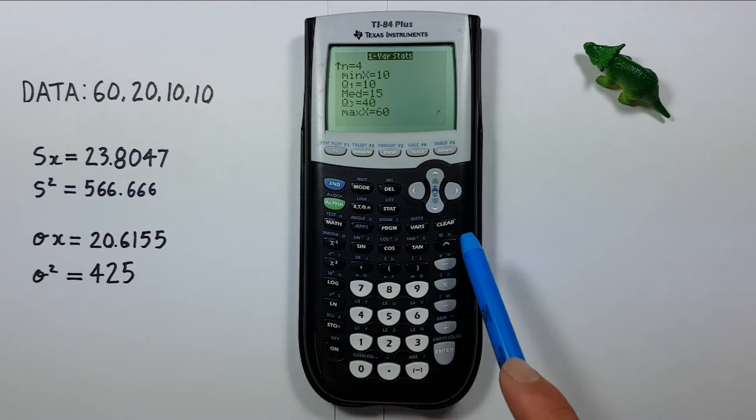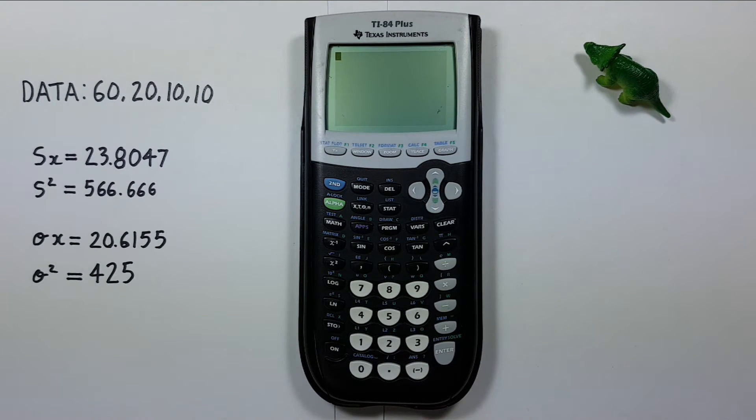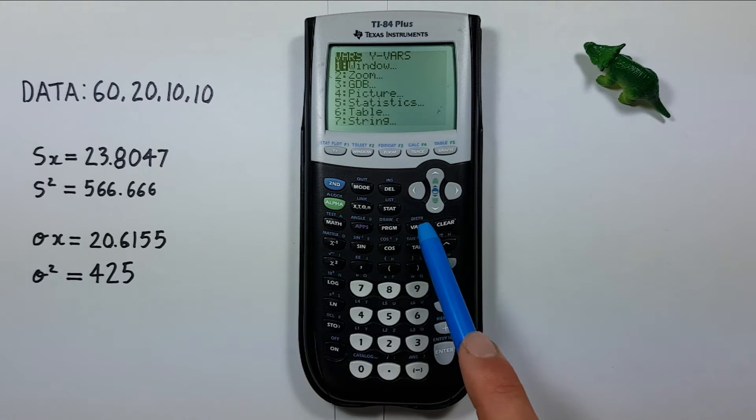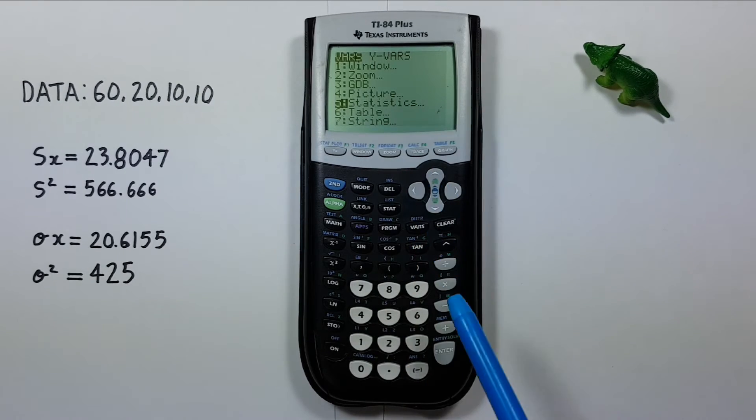When we're done with this we can exit the screen by pressing the CLEAR key. Now that's great for taking a quick glance, but what if we want to use these values in a calculation? Well we can get them by pressing the VARS key here, scrolling down to number 5 statistics, and pressing ENTER.